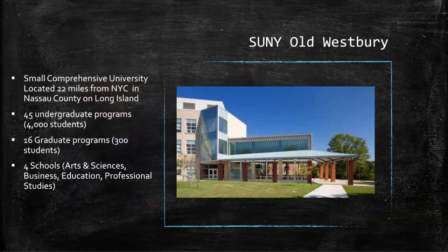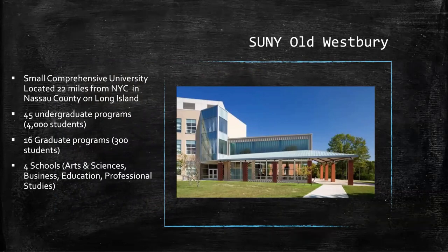Just to give you an overview — SUNY is a huge institution with 64 campuses. We're on Long Island, very close to New York City. We have 45 undergraduate programs. Around 4,000 students — though enrollment has dropped slightly. We have four schools and are a small, comprehensive university.